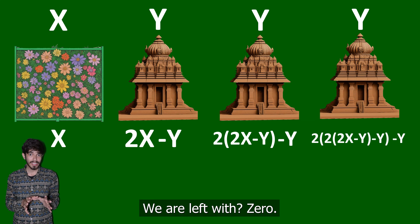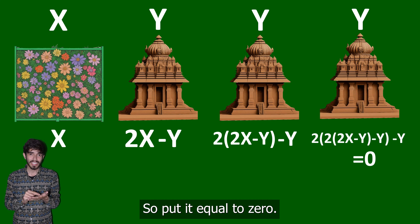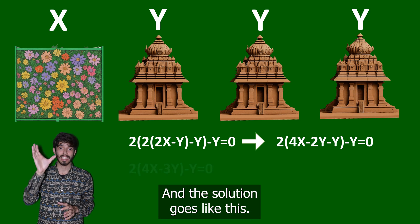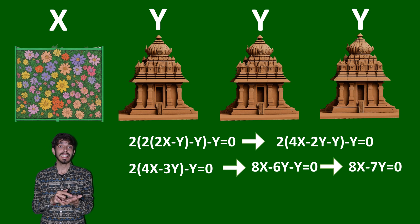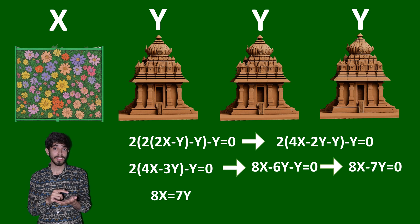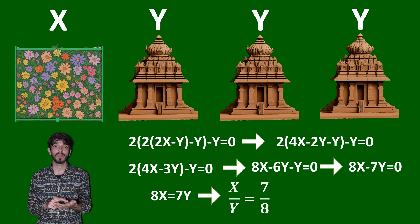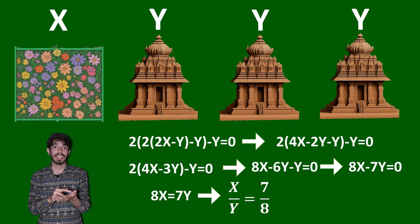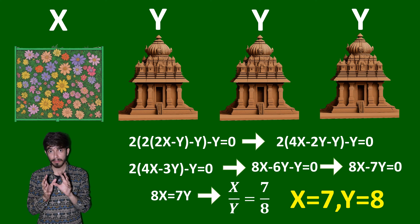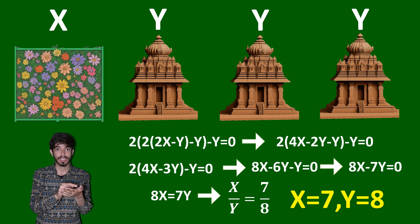The number of flowers remaining equals 0, so we set the expression equal to 0 and solve. This gives us 8x = 7y, or x/y = 7/8. The simplest solution is x = 7 and y = 8 — he picks 7 flowers and offers 8 in each temple.